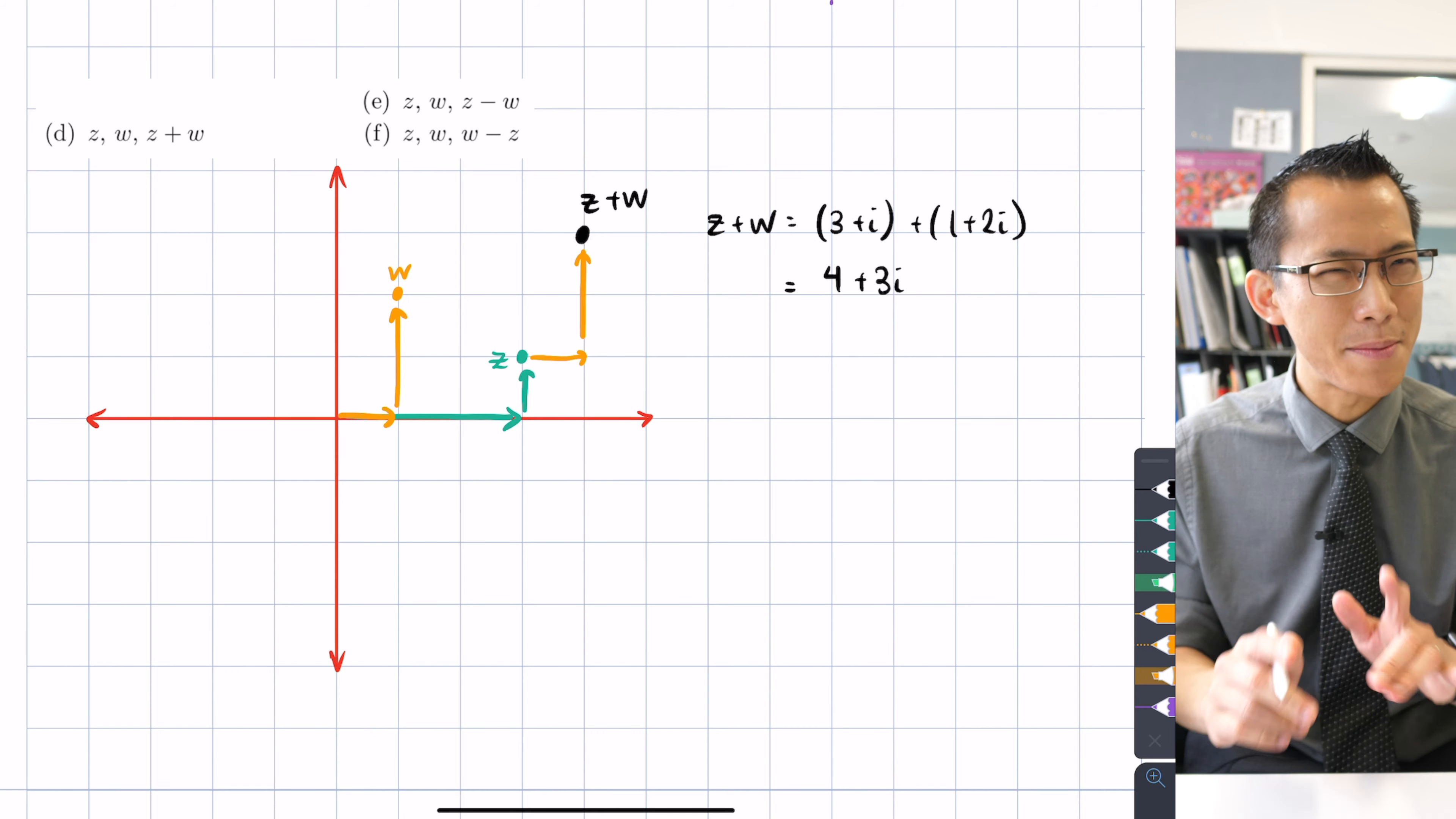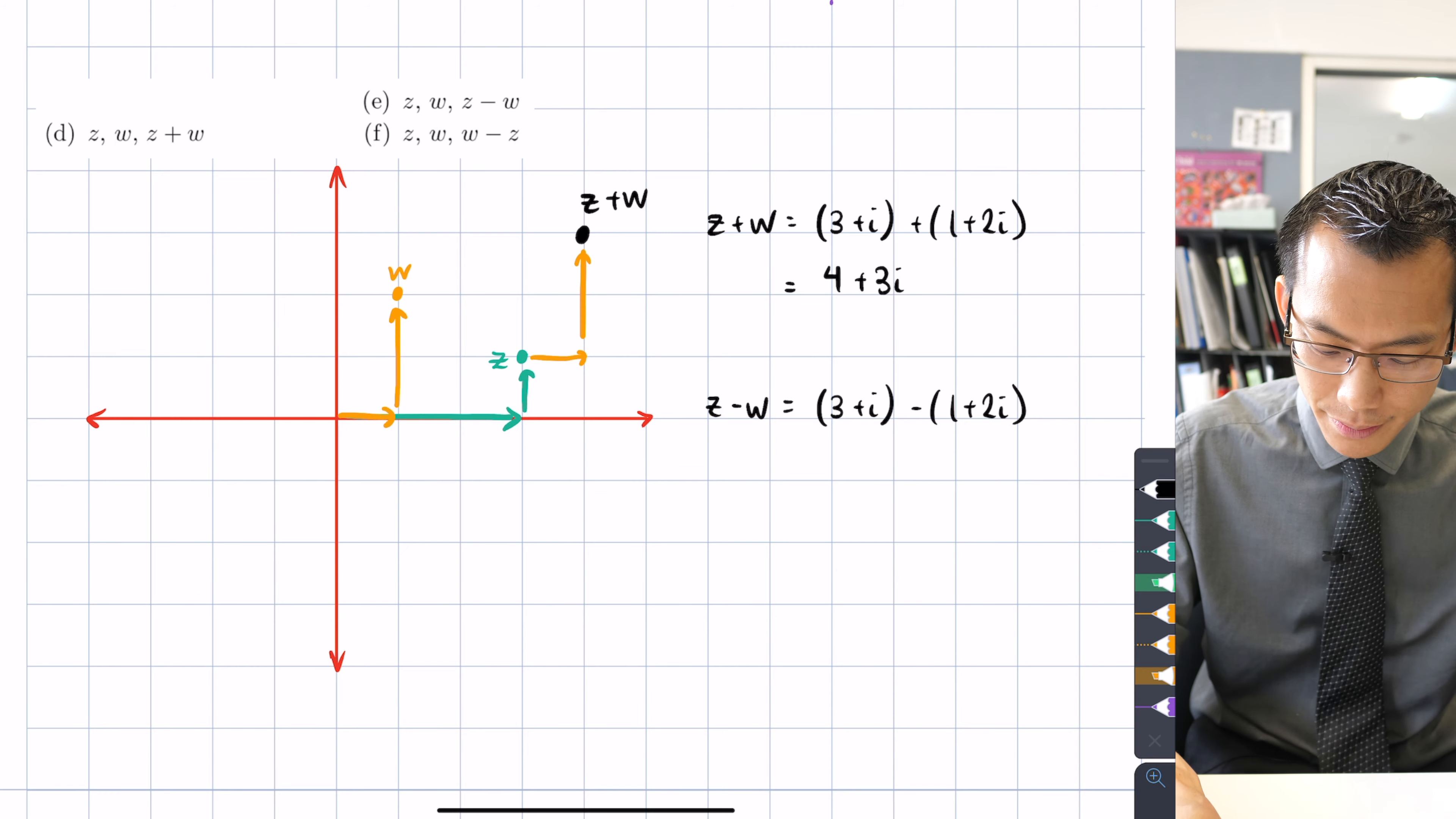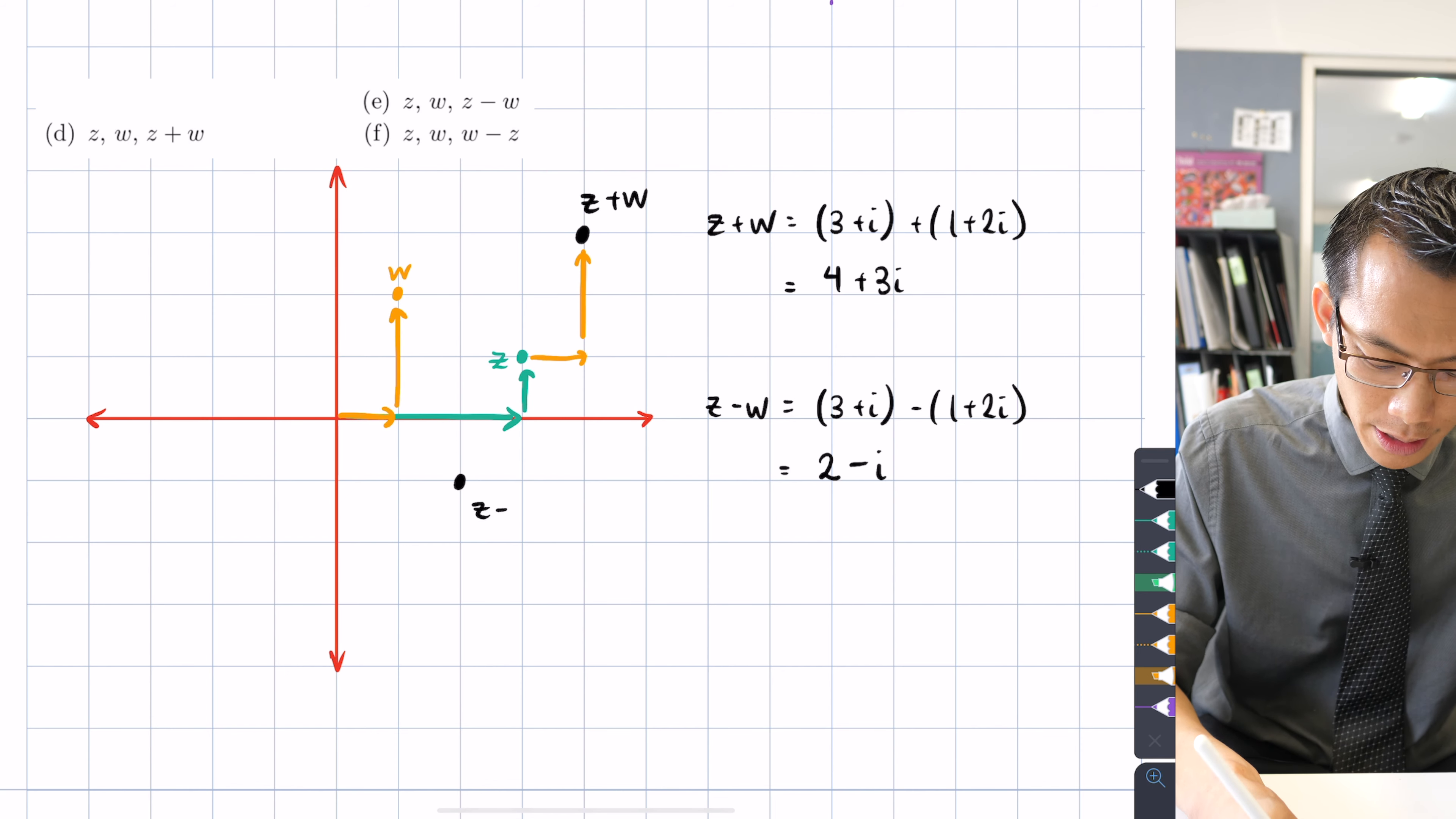Now this is going to start to get busy but I think we'll be able to fit it in there. Let's do z - w as well. So z - w, where's that going to land us? It's the same operation that we saw before, the same order anyway, but I'm subtracting instead of adding. Collect our real and imaginary parts again. So 3 - 1 gives us 2 and then i - 2i gives me -i. So where is that going to go? 2 - i is going to be here. This will be z - w.